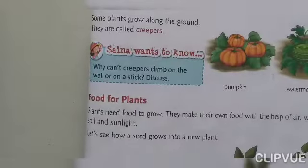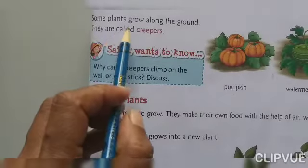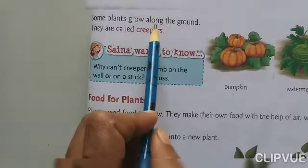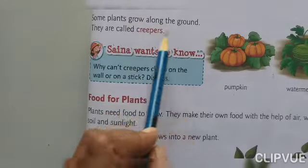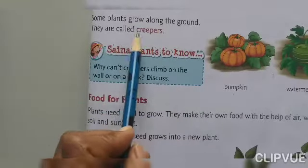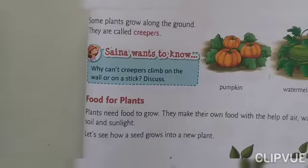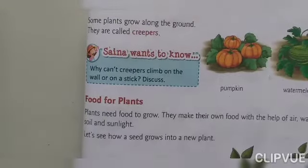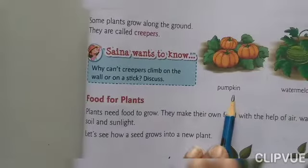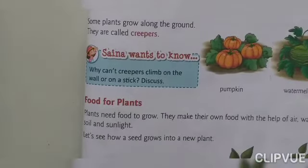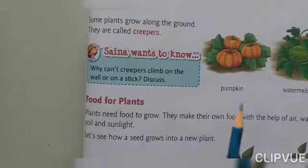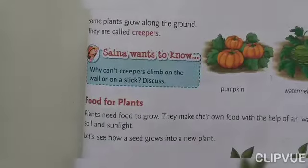Next, page 81. Some plants grow along the ground — these are creepers. They grow along the ground, on top of it. Here the pumpkin and watermelon grow along the ground.